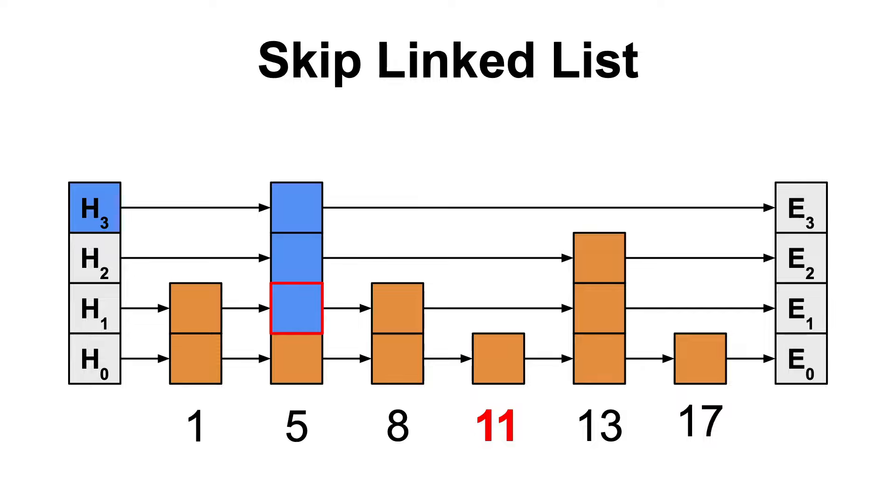Now, we check the next node, which is lower than 11, so we move to that node now. The next node is 13 again, which is greater than 11, so we move down again. The next node is now 11, which is exactly what we wanted to find, so we end the search.